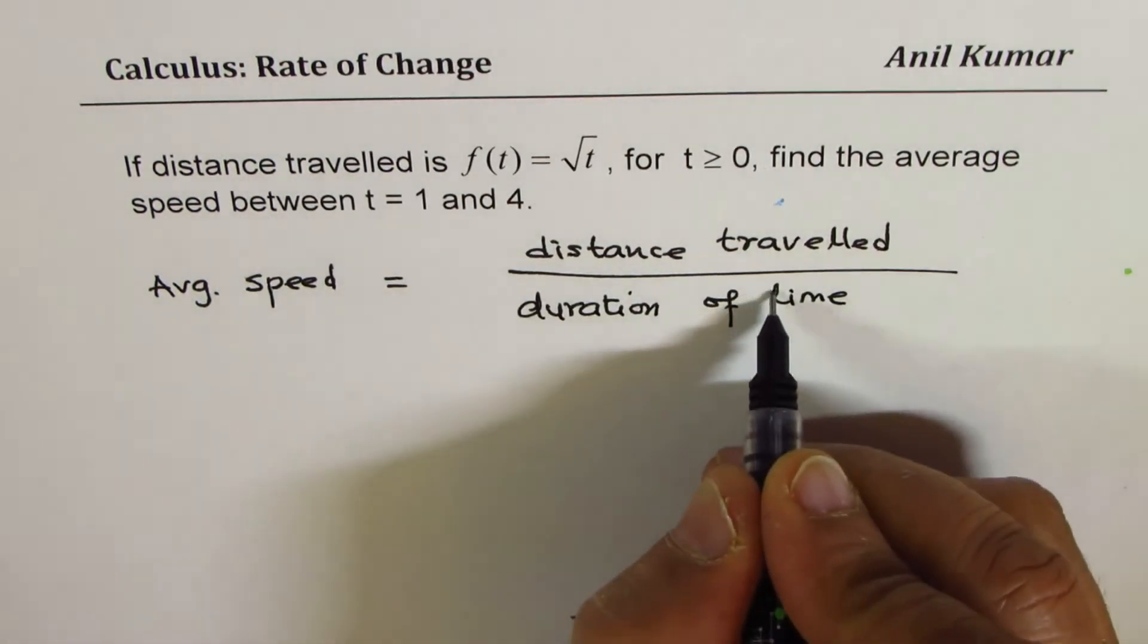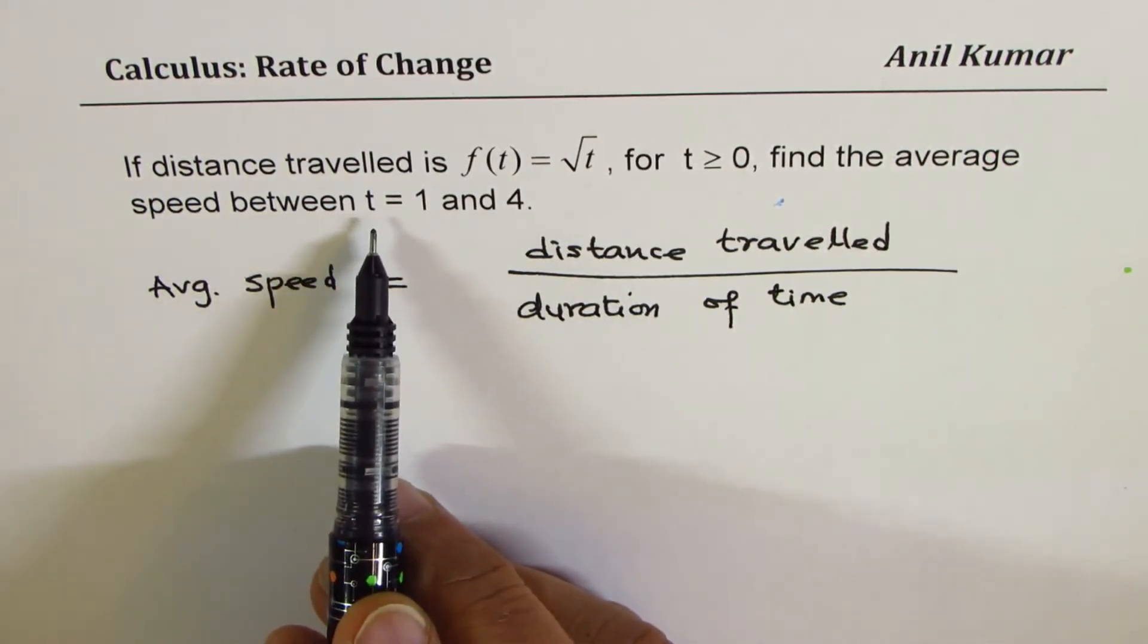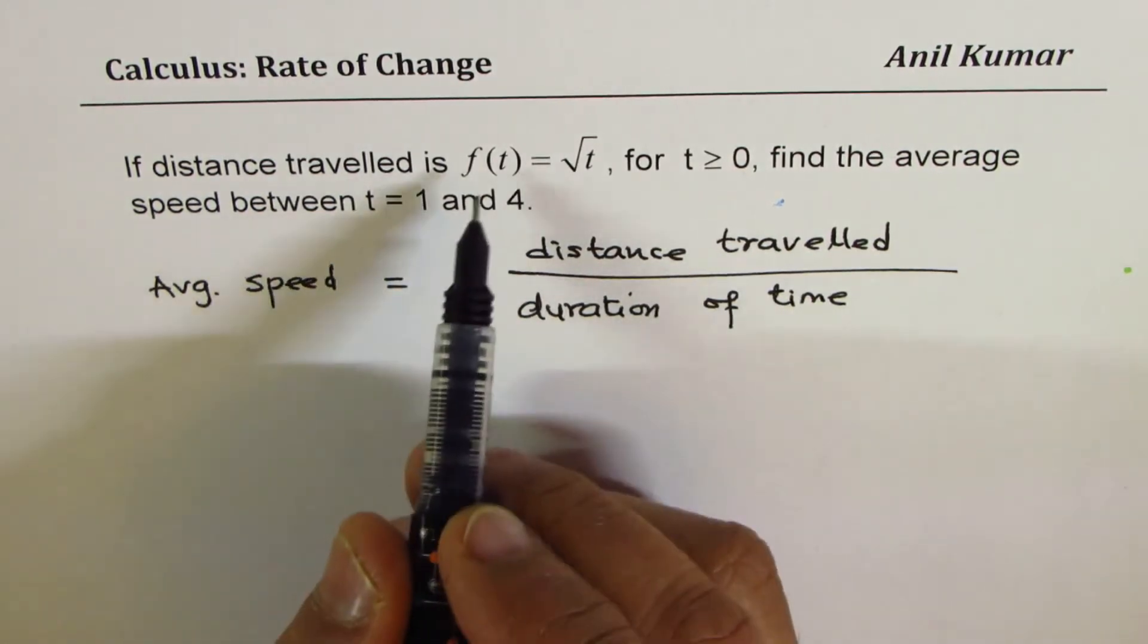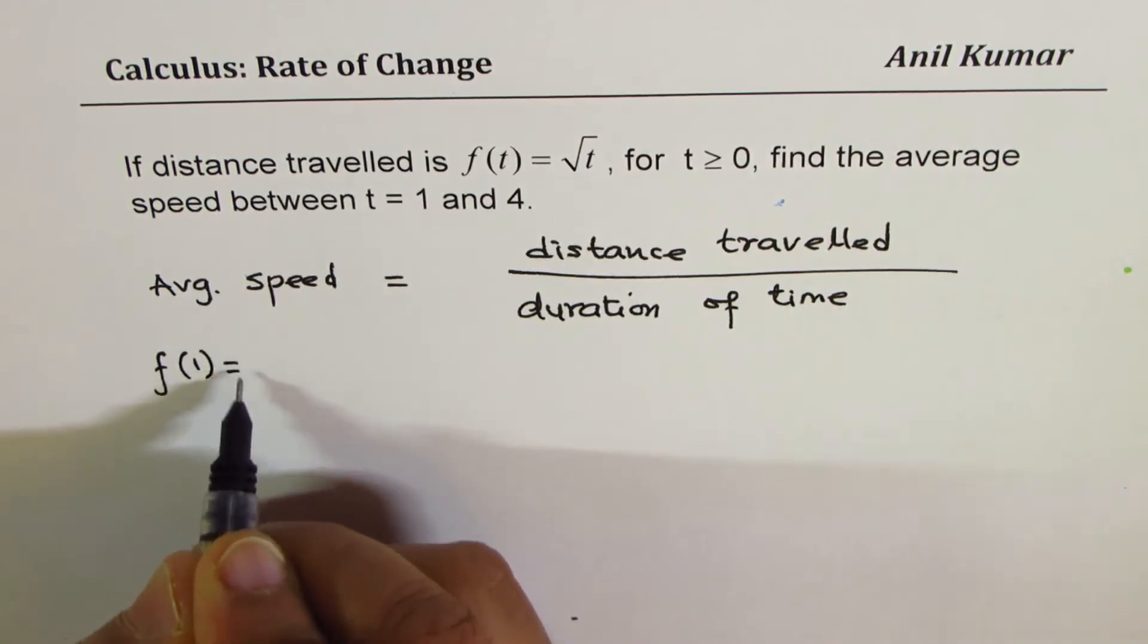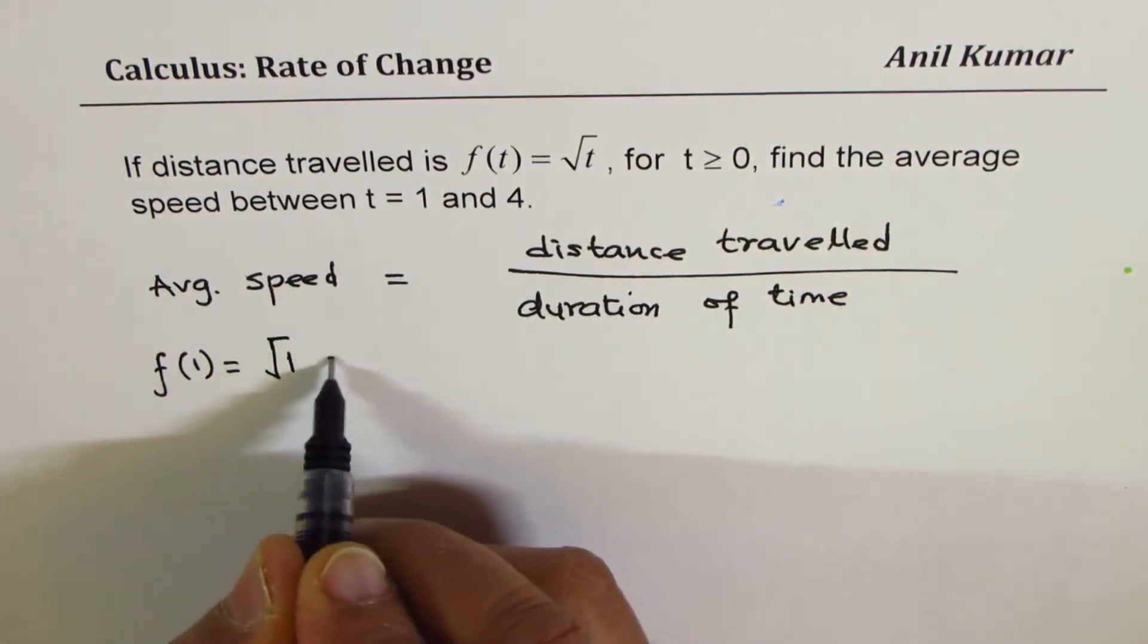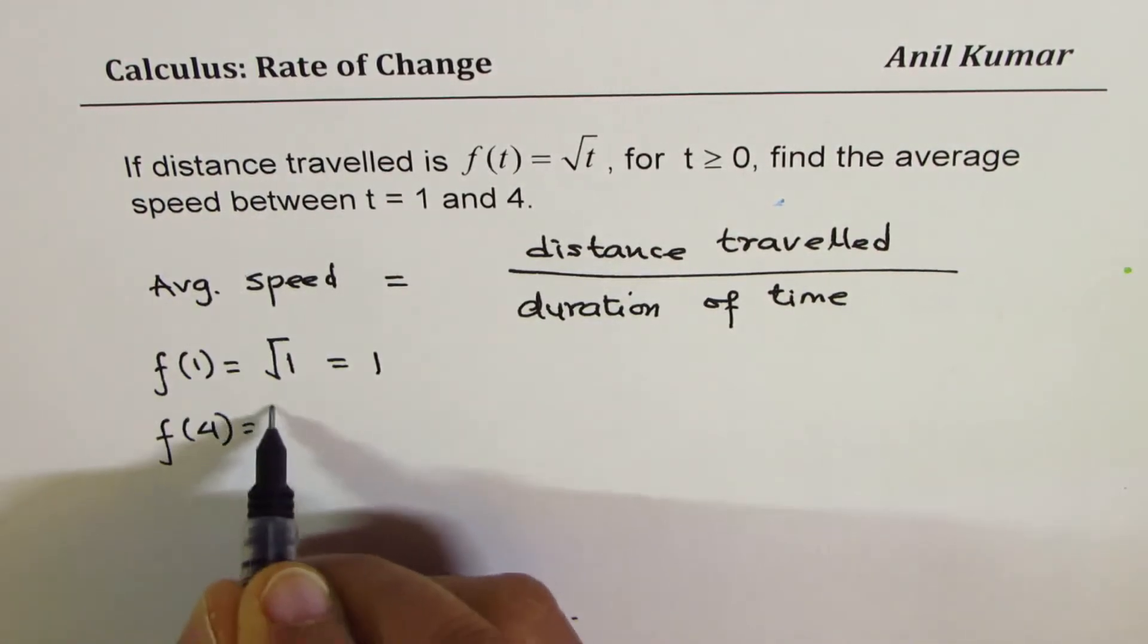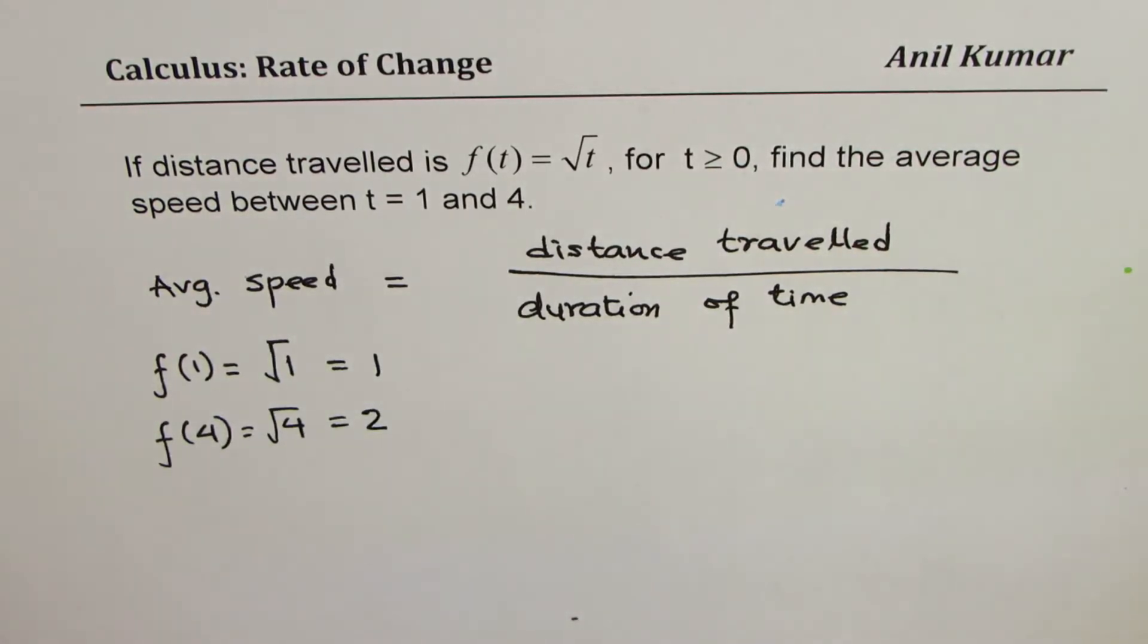Now, in this case, we have to find average speed between time t = 1 to 4. So what we can do is find the value of this function at 1. At 1, it is √1, which equals 1. The value of this function at 4 is √4, which equals 2.